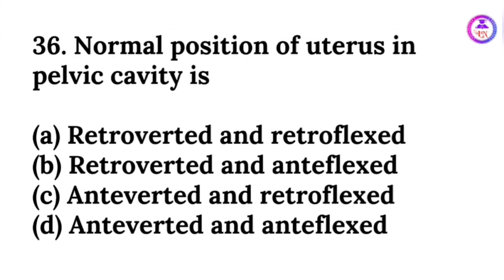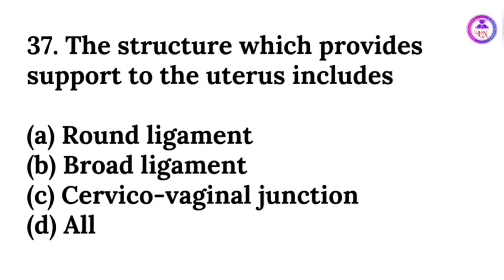The normal position of the uterus in the pelvic cavity is anteverted and anteflexed. The structures which provide support to the uterus include the round ligament, the broad ligament, and the cervicovaginal junction — so the answer is all of the above.